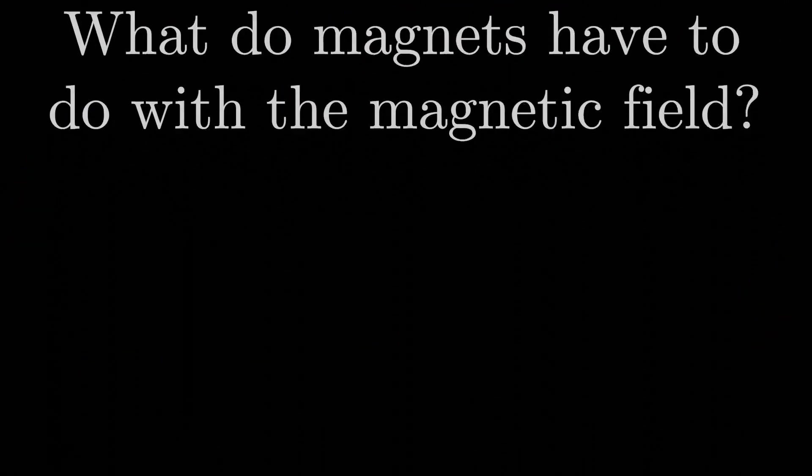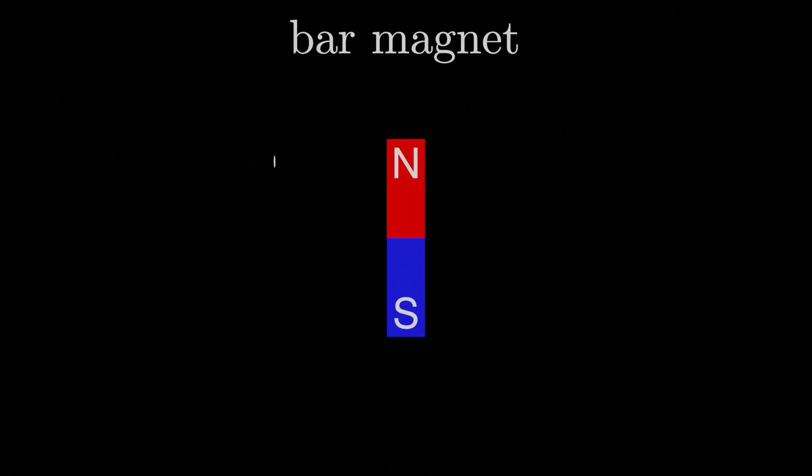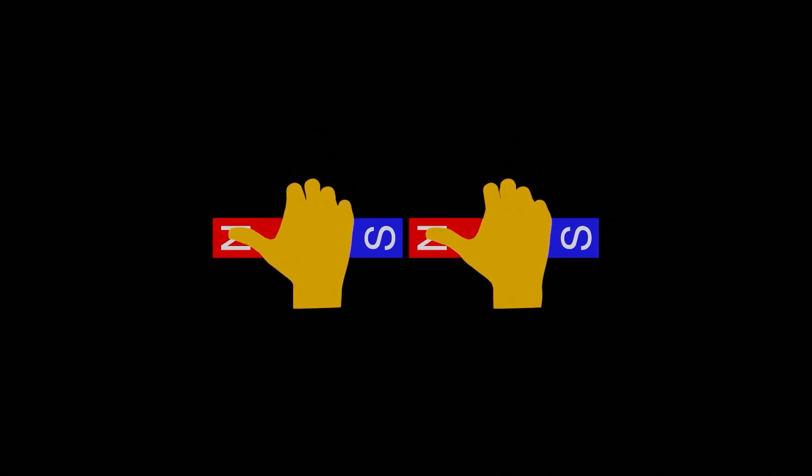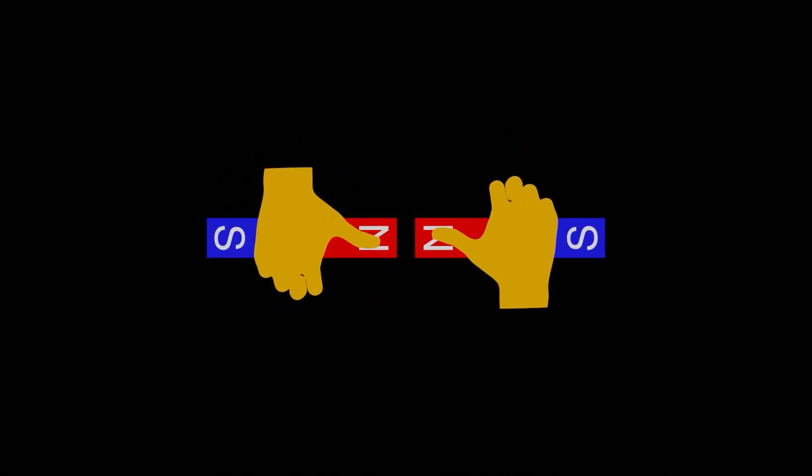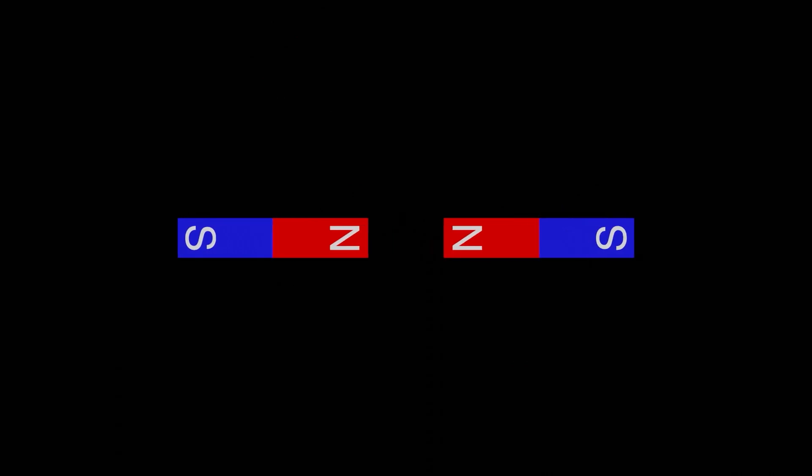Let's consider a normal bar magnet. Bar magnets always have a north pole and a south pole. What do these mean? You might have been taught in grade school that when you have magnets with opposite poles close to each other like this, they attract one another. And when like poles are close to each other, they repel. Why does that happen?